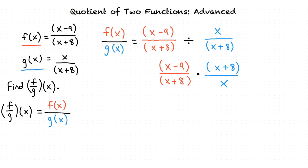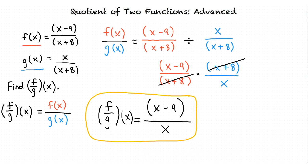We notice that we have an x plus 8 in the numerator and the denominator, and since we are multiplying, we can cancel. Canceling x plus 8, our final answer is the quotient f divided by g of x equals x minus 9 divided by x.